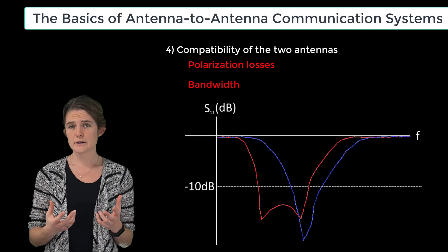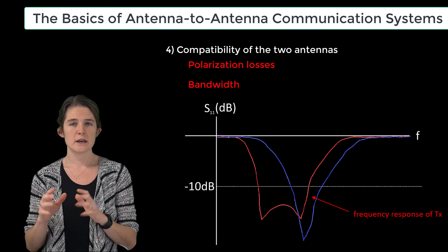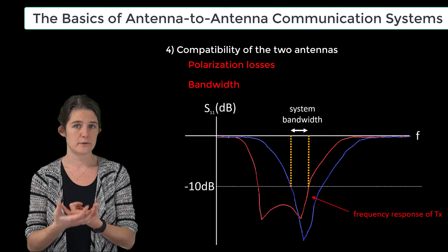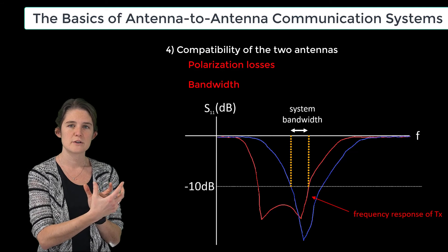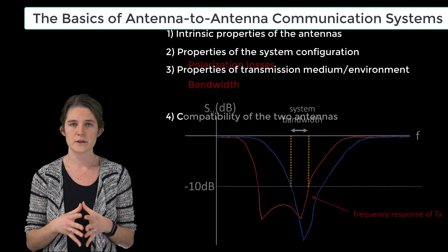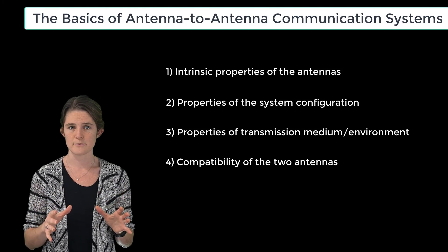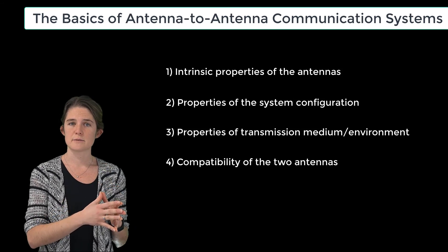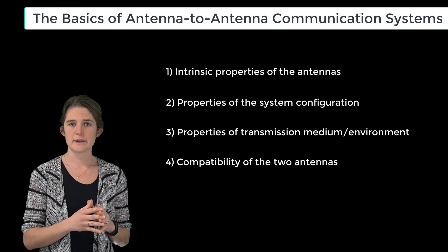Another compatibility factor is bandwidth. Each antenna has a certain range of frequencies over which it can send or receive electromagnetic waves. For the system to work, both antennas must operate over the same band of frequencies — their bandwidths must have some region of overlap, and that overlapping region constrains system performance. In summary, the four categories of factors impacting system gain in a two-antenna system are: intrinsic properties of the individual antennas, properties of the system configuration, properties of the transmission medium and/or environment, and compatibility of the two antennas.